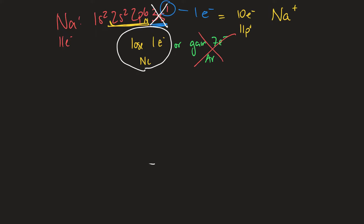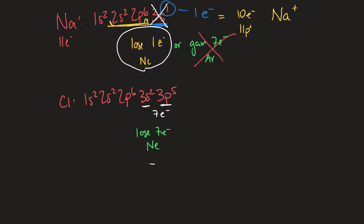Let's look at chlorine. If you write out its electron configuration, you have 1s2, 2s2, 2p6, 3s2, 3p5. Looking at its valence shell, there are 7 electrons. To be full it needs 8. Chlorine could either lose all 7 to have the noble gas configuration of neon, or it could gain one electron to have the noble gas configuration of argon.